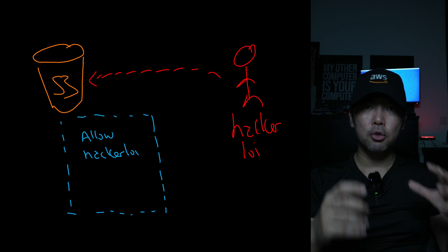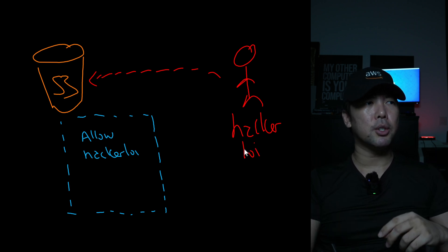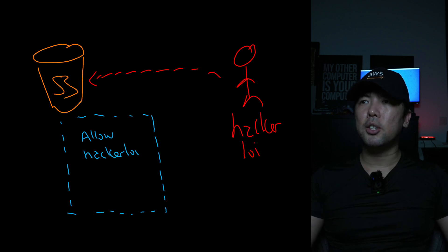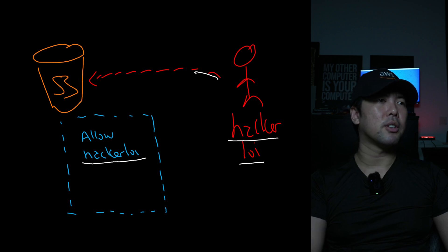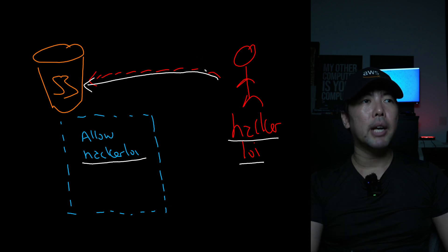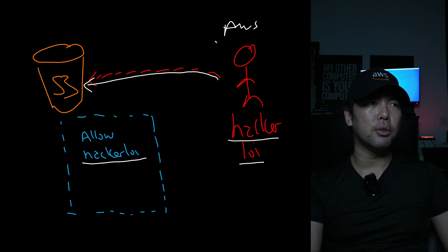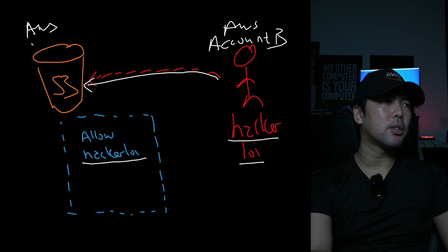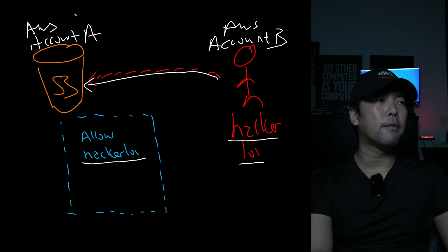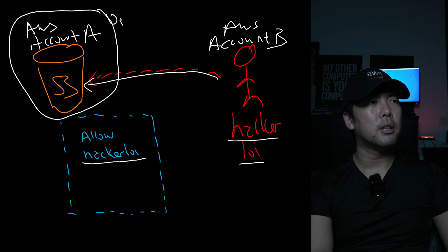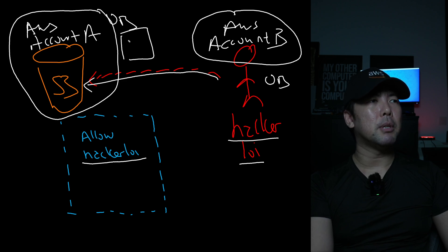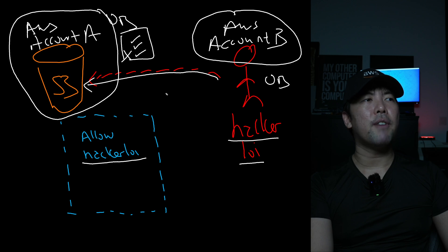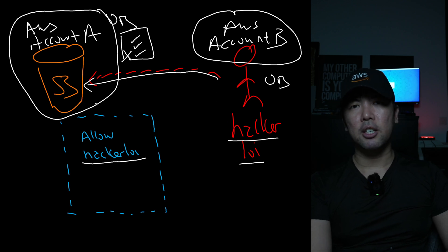You can see right here: the service control policy is not effective on resource-based policies because the resource grants an external principal - in this case Mr. HackerLoy. Mr. HackerLoy has access into this S3 bucket as an external AWS account. It is not internal. This is AWS account B, and we have AWS account A, and they belong to two different organizations. So the service control policy placed here has no effect on whether Mr. HackerLoy can access this S3 bucket or not.